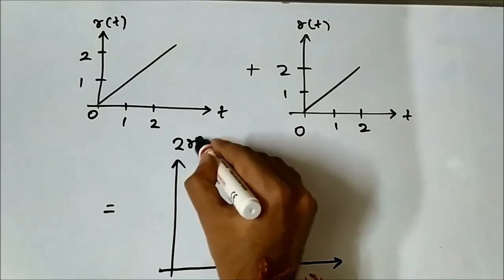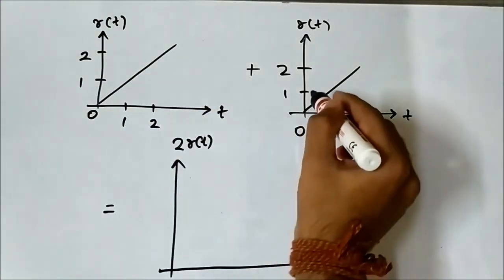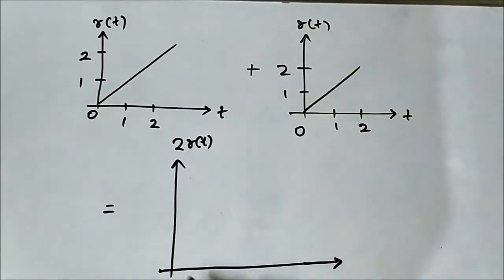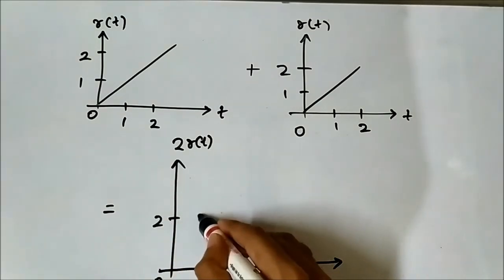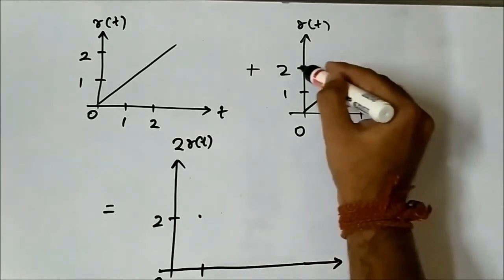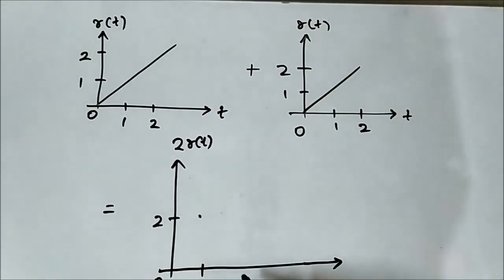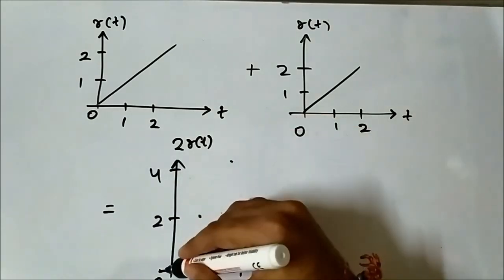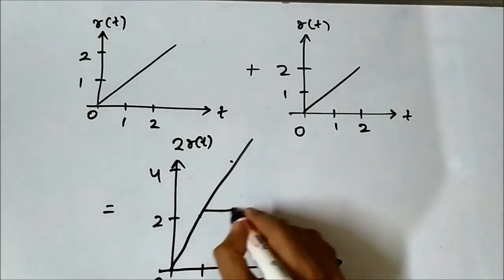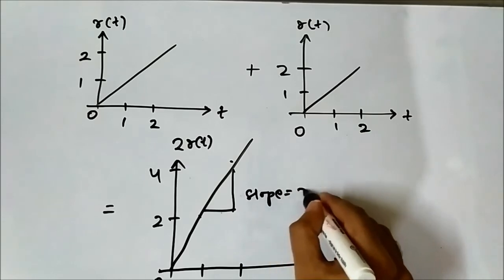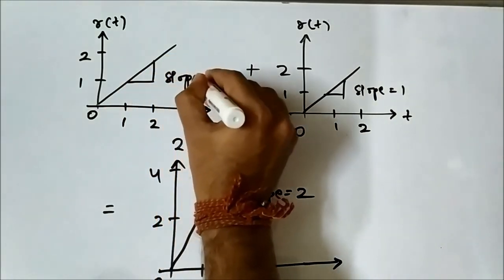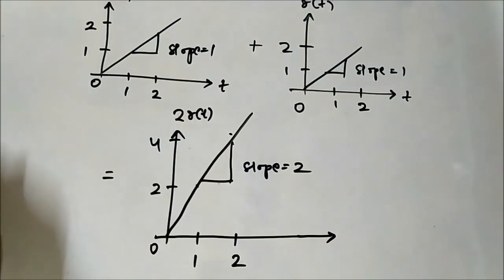The result will be 2·r(t) because at each time interval the values get added. At t=1 the value is 1 here and also 1 in the second signal, so the resultant at t=1 will be 1+1=2. Similarly at t=2 the value is 2 in each signal, so when added it becomes 4. The resultant slope equals 2, whereas the original slope was 1.